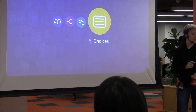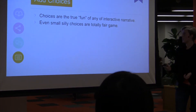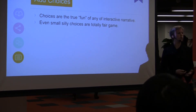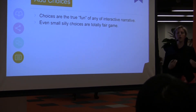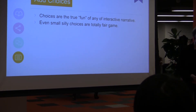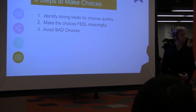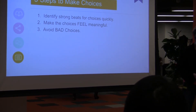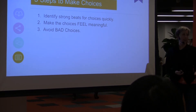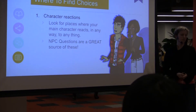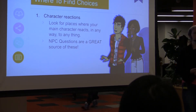Now it's time to load the choices. Choices aren't really the heart of these interactive narratives — they're usually the small things, a little less impactful. But they allow me to feel like I am this character and I am affecting this world in small and interesting ways. So how can you do that? One: you need to identify the strong beats for your choices quickly. You need to make sure those choices feel meaningful when they happen, even though they aren't — because remember, choices are not super meaningful. And you need to avoid the bad choices.